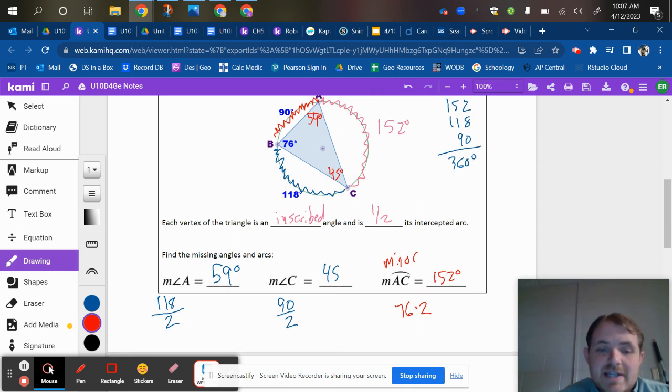So remember, the shortcut here is if you go from angle to arc, you have to multiply it by two.